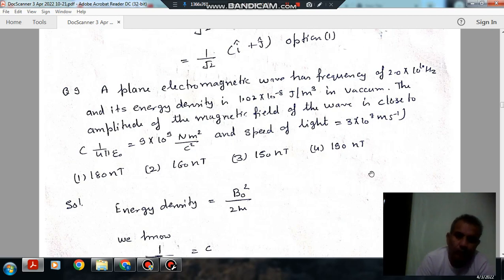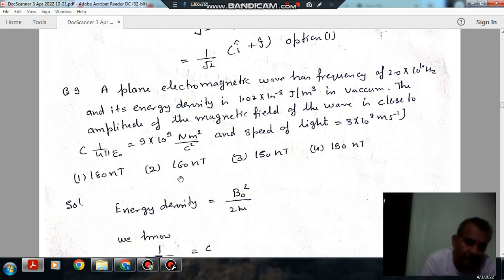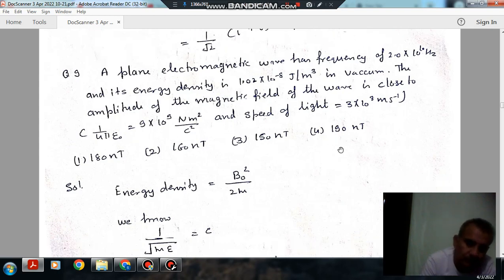The electromagnetic field of the wave is close to some given data: 1 by 4 pi epsilon 0 equals 9 into 10^9 newton meter square per coulomb square and speed of light is 3 into 10^8 meter per second. Options are 180 nanotesla, option 2: 160 nanotesla, option 3: 160 nanotesla, and option 4: 190 nanotesla.